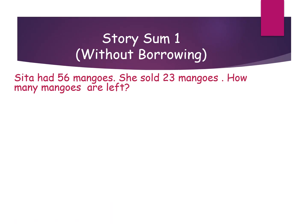Here is the first story sum. Sita had 56 mangoes and she sold 23 mangoes. How many mangoes are left? Here we are using the keyword 'left', which means subtraction. Left is the keyword of subtraction.